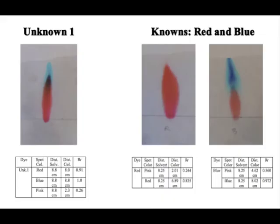Now look at the first unknown. Our paper shows that there are three spots of color present. The RF value of the red is 0.91, the blue is 1.0, and the pink is 0.26.